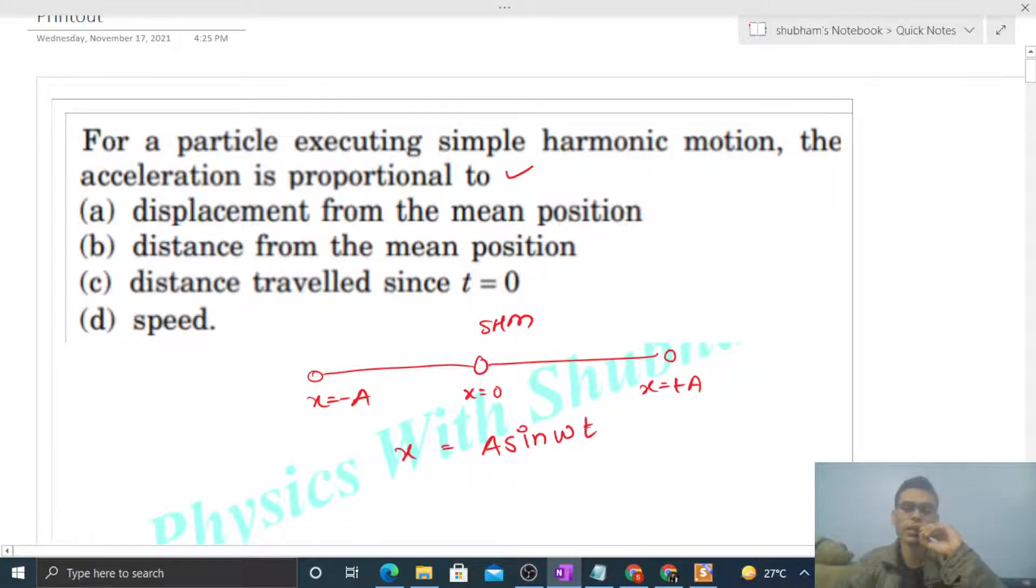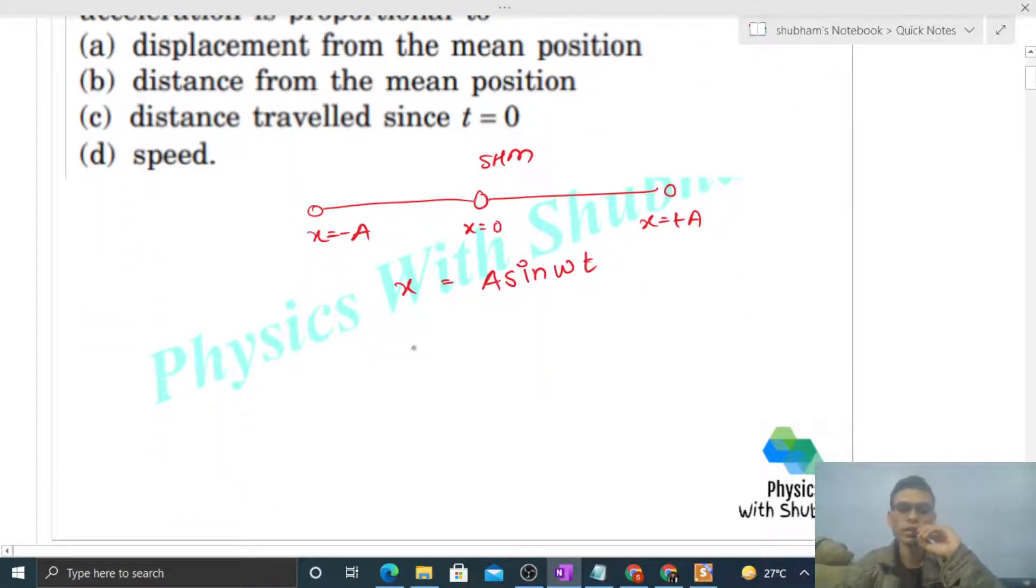Can you find out the speed? Speed will be dx by dt, so if we differentiate this, we get A omega cos omega t.